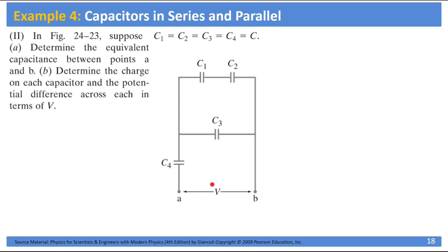What it means to have a potential difference between points A and B is maybe this is a part of a much more complicated circuit and the potential difference is kept constant at V, or you might simply have a simple battery here. It doesn't make any difference when it comes to the equivalent capacitance or the charge or the voltage across these capacitors. Since I like to keep things simple, I'm going to stick with the battery here.